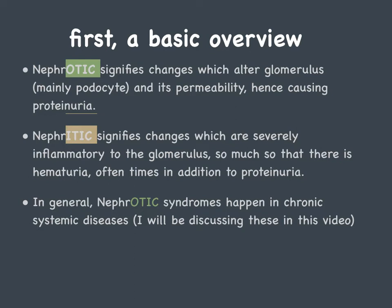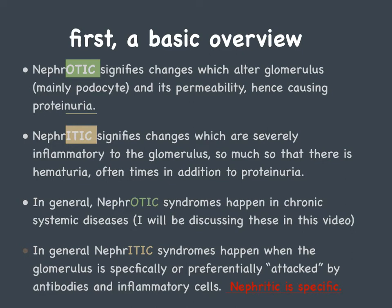What happens is these chronic disease processes, especially HIV, hepatitis B, and hepatitis C, may involve some kind of immune complex formation that deposits in the kidney causing nephrotic syndrome. On the other hand, nephritic syndrome happens when the glomerulus is specifically or preferentially attacked by antibodies and inflammatory cells — nephritic is specific.